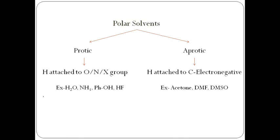Examples of polar protic solvents: water — the proton H is attached to electronegative oxygen, so it is an inorganic polar protic solvent. Ammonia — nitrogen is more electronegative than hydrogen, so it is again polar protic. Phenol — hydrogen is attached to electronegative oxygen, so it is an organic polar protic solvent. HF (hydrogen fluoride) — hydrogen is directly in contact with fluorine, so H is acidic and it is a polar protic solvent.